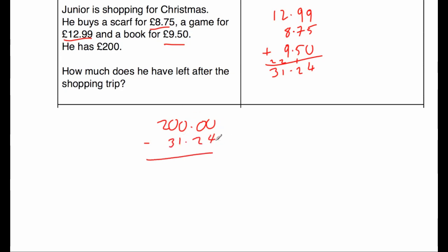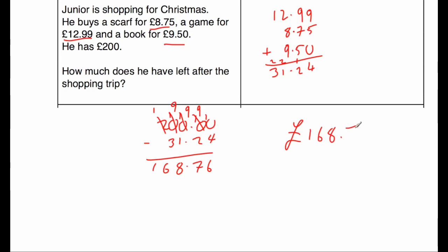0 take away 4 we can't do, so we're going to need to borrow all the way from here — there were 2, so we'll cross that out and call it a 1, and that's now a 10, cross that out, that's now a 9 and a 10, cross that out, 9 and a 10. 10 take away 4 is 6, 9 take away 2 is 7, 9 take away 1 is 8, 9 take away 3 is 6, and 1 take away 0 is 1, so the answer would be £168.76.